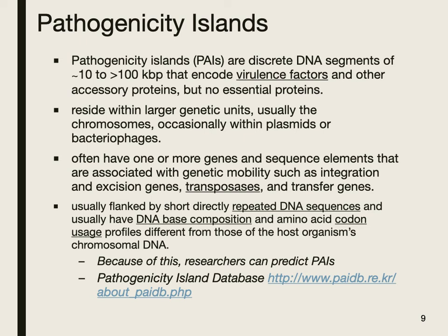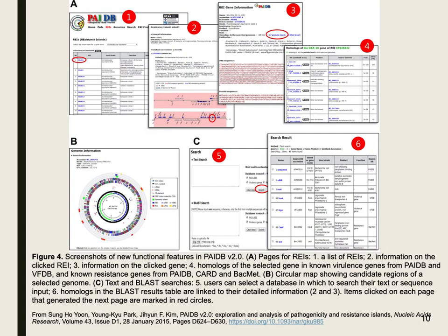There's a pathogenicity island database, and the link is provided. In this database, researchers have done BLAST searches — looking at sequences — and through data mining and analysis, examining GC ratios and flanking genes, they can predict whether a sequence would be a pathogenicity island that's highly mobile in the bacteria and correlates to virulence factors. This figure is from a cited source, and I highly recommend looking at that paper if you're interested in this database, perhaps incorporating it into your capstone project.